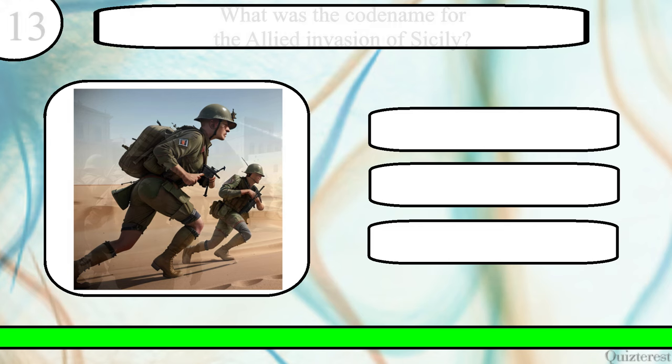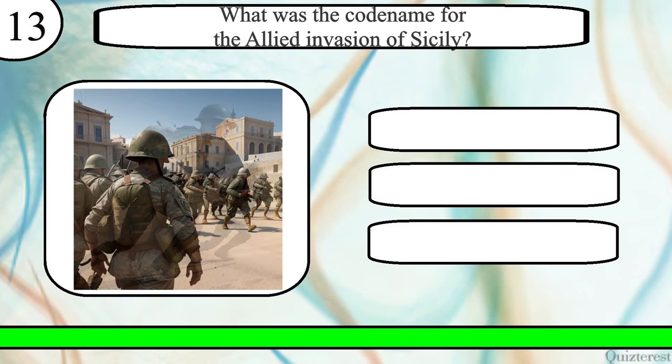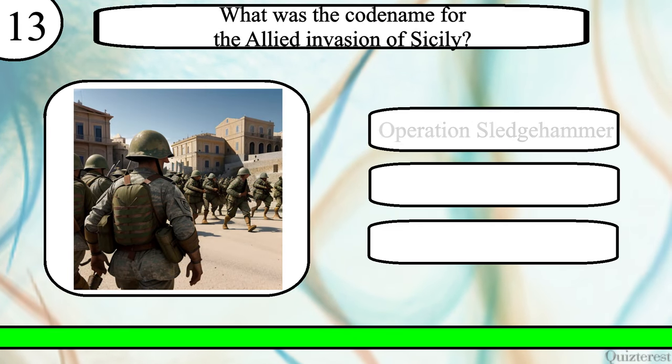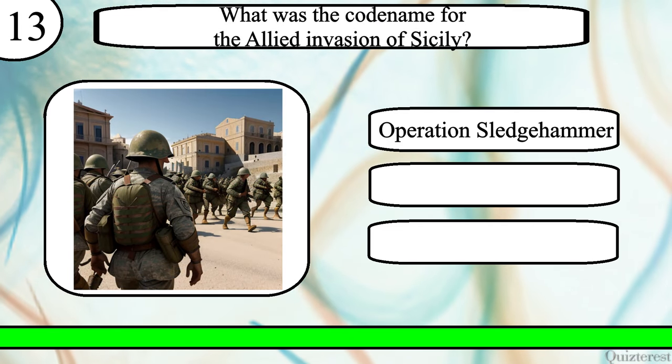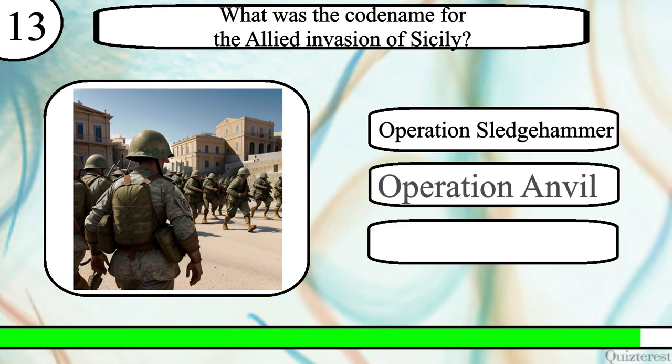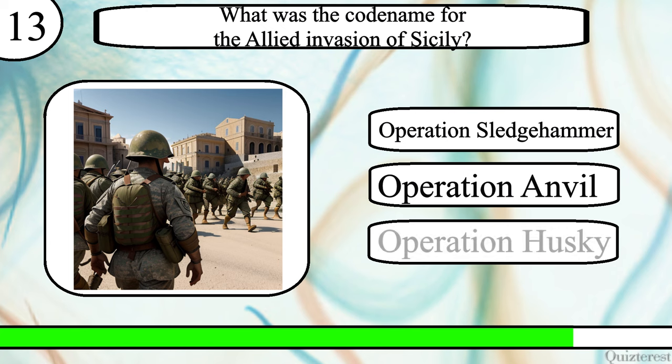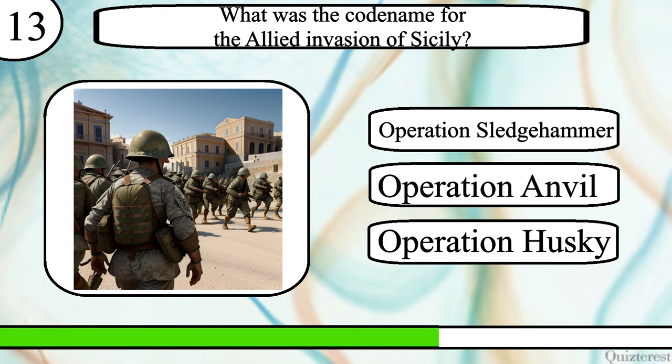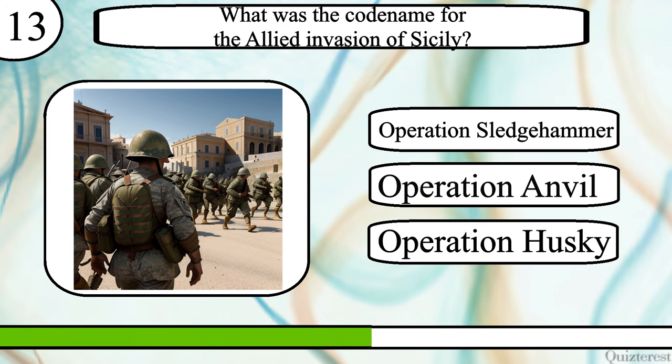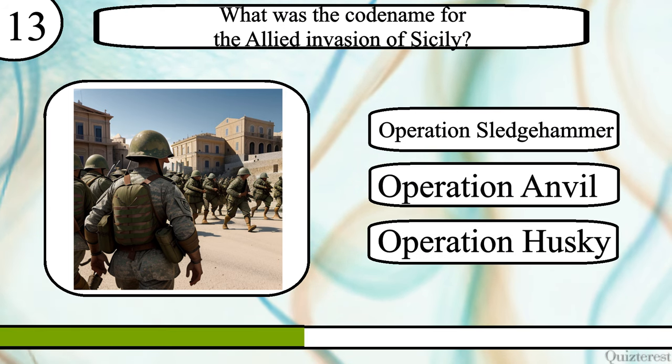Question 13. What was the codename for the Allied invasion of Sicily? Operation Sledgehammer, Operation Anvil, or Operation Husky?